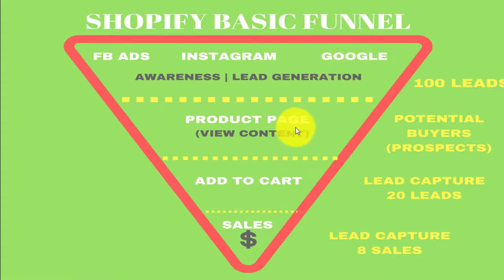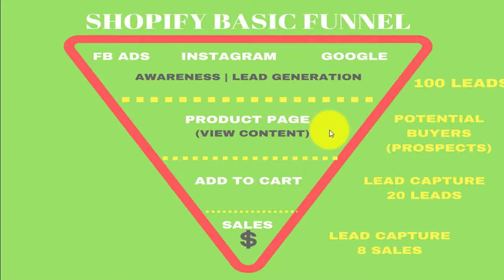When they land on your product page, you need to optimize it so that customers will be willing to buy. We can cause them to be impulse buyers by adding scarcity to the page. We should also add social proof, trust badges, and trust seals so they feel safe.